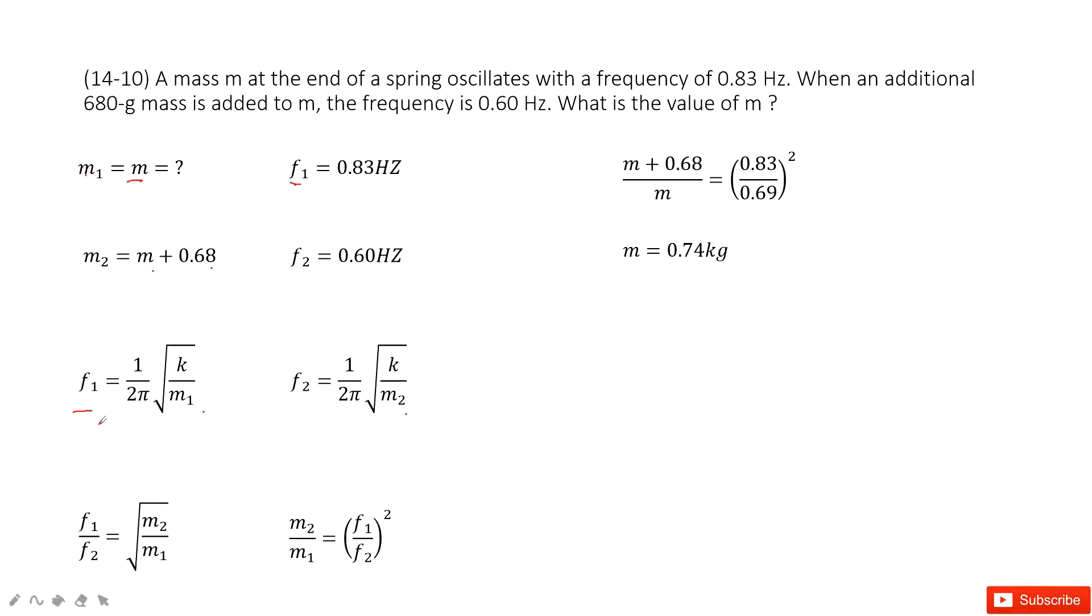And then we do the ratio. Use f1 divided by f2. We get this function. And in this function, we can write it in this way to get the ratio m2 over m1 equal to f1 over f2 squared.